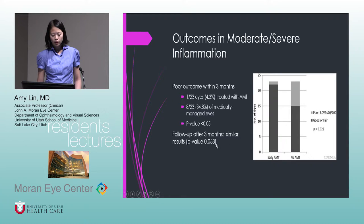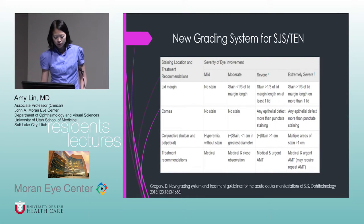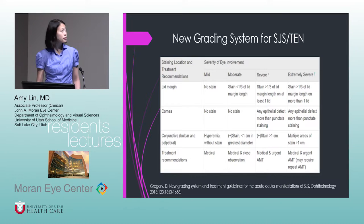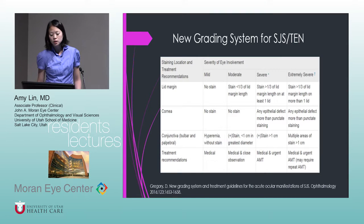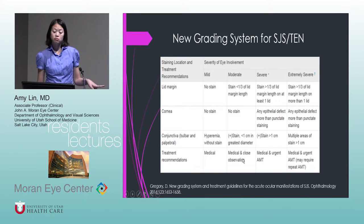There's a higher p-value after three months, but results were similar. Last month's Ophthalmology journal had a new grading system for Stevens-Johnson, which is a nice way to help determine what to do for certain severity grades.